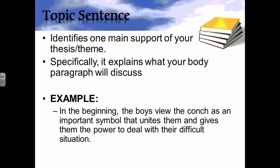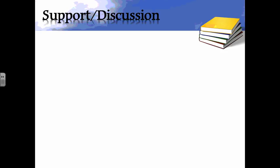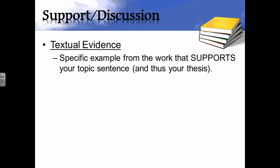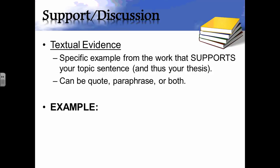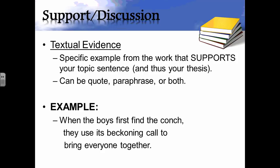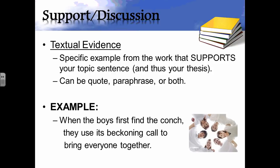To support your topic sentence, you use textual evidence — examples from the work that support both your topic sentence and your thesis. It can be a quote, a paraphrase, or a reference to something that occurred in the text. Here's a simple example: 'When the boys first find the conch, they use its beckoning call to bring everyone together.' That supports the first body paragraph's focus and is textual support — it tells the reader this happened in the novel and supports the point.